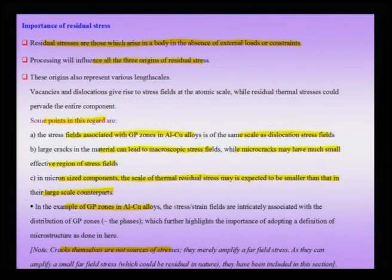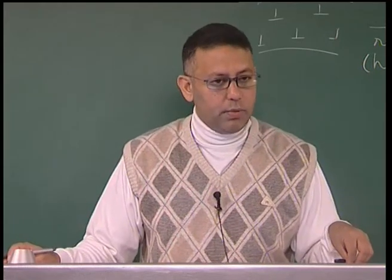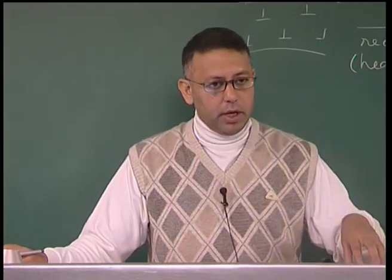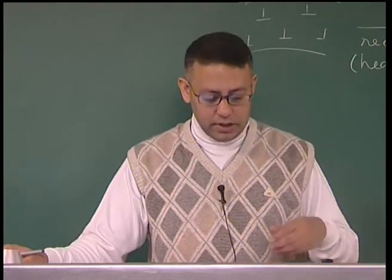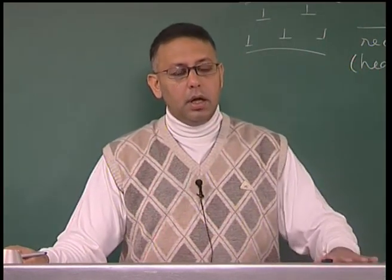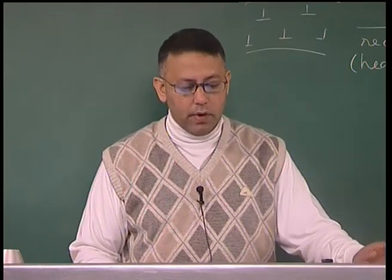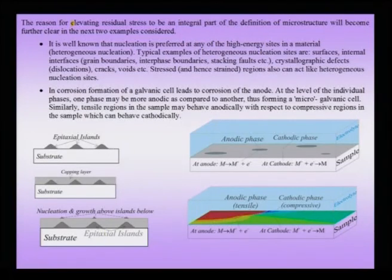In aluminum-copper alloys, the stress-strain fields are intricately associated with the distribution of GP zones — the phases — which further highlights the importance of a microstructure definition that includes not only phases and their distribution, and defect structure and distribution, but also residual stress and its distribution. Wherever GP zones, theta-double-prime, or theta-prime precipitates form, the distribution of phases is very intricately associated with the distribution of residual stresses, because these arise from phase transformations. This justifies elevating residual stress to a core component of the microstructure definition.